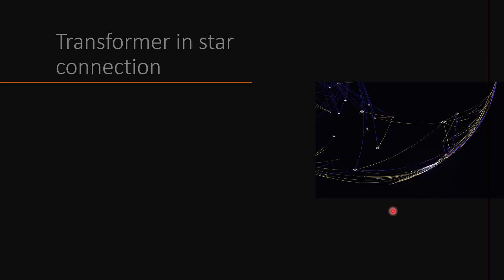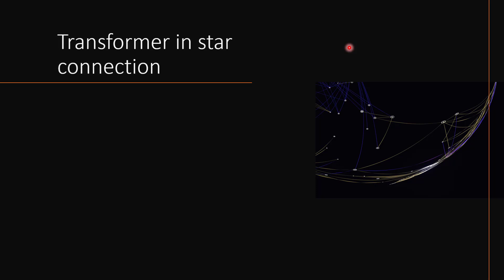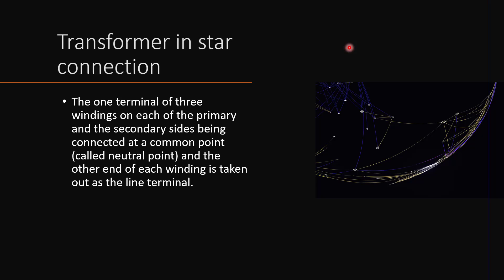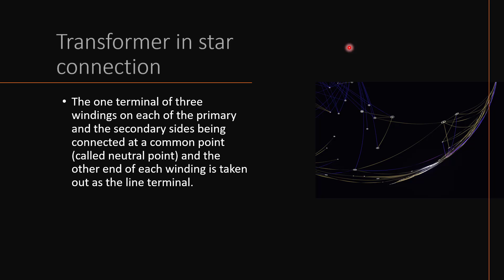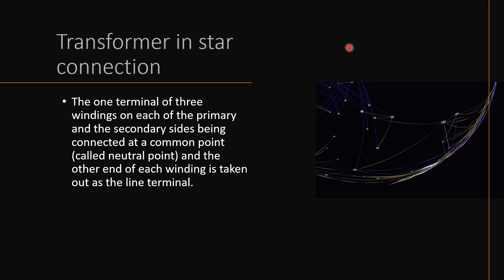In the previous video, we started a transformer series, and this is a continuation to that series. Please watch that series also — I will provide the link in the description box. As we know, a transformer has two windings: one is primary and the other is secondary. In a three-phase transformer, in the primary also there will be three phases, and these three phases can be arranged in either star or delta configuration. Please bear in mind that star and delta configuration is only applicable for three-phase systems, not for single-phase systems.